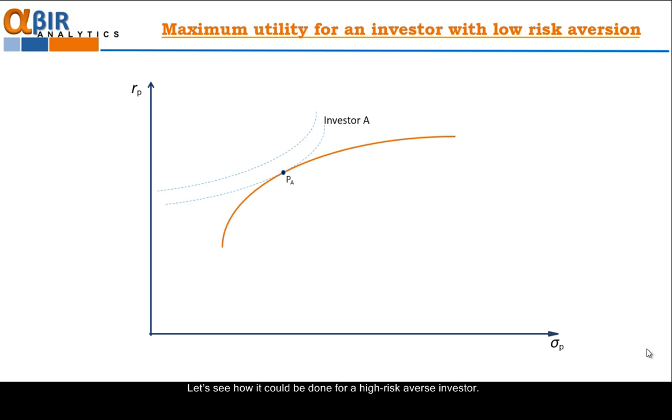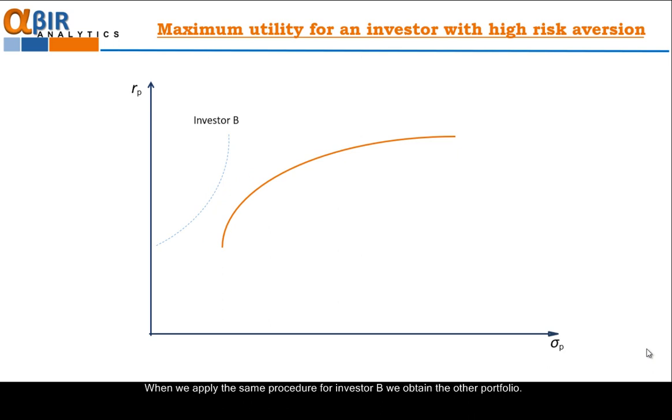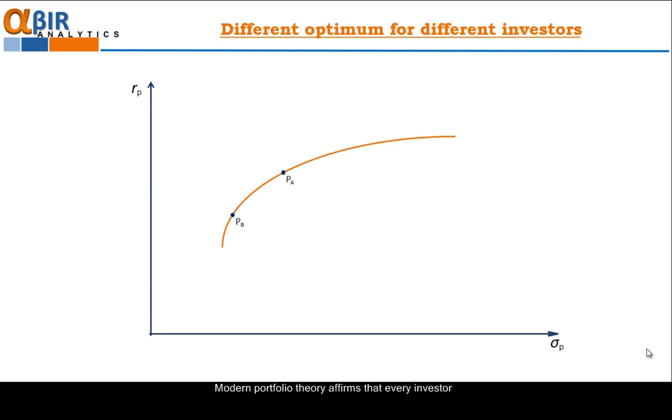Let's see how it could be done for high risk averse investor. When we apply the same procedure for investor B, we obtain the other portfolio. This portfolio maximizes utility for this fearful investor. And here we have the genius outcome of this procedure. Modern portfolio theory affirms that every investor should invest only in portfolios located on efficient frontier. According to individual risk aversion characteristics of the investor, she or he will locate the portfolio at different points of the frontier. Low risk aversion investor will invest in portfolios located on upper right part of the efficient frontier. High risk averse investors should invest in portfolios from down left part of the frontier.